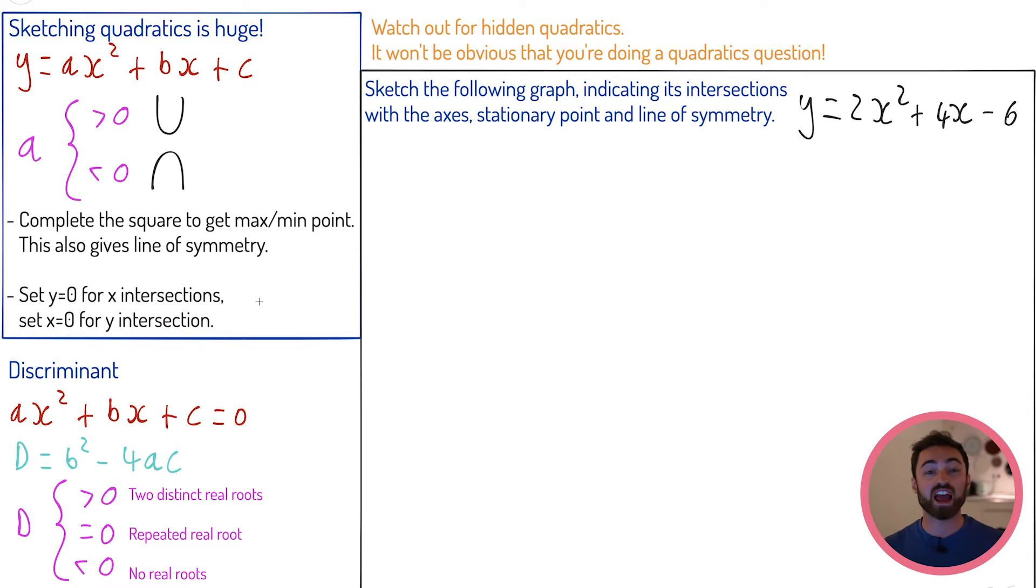In GCSE, you do a lot of work on quadratics, one of those being how to solve quadratics. We can factorize them, we can complete the square, and we can use the quadratic formula. I'm not going to spend too long in this video talking about all of those things because I'm assuming that as prior knowledge. I more want to talk about the A-level stuff today. Turns out you can also use your calculator at A-level to solve quadratics. I'm not going to dedicate a lot of time to solving them.